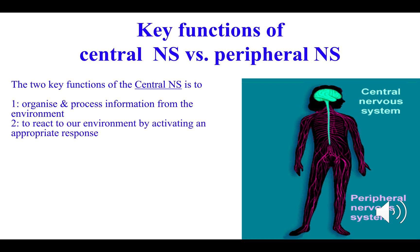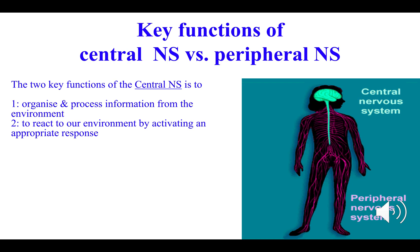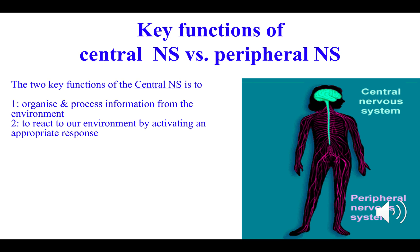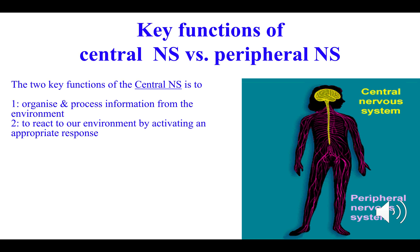The second key function of the CNS is to react to this information by triggering a response or a change. So once the brain receives information from the various physiological systems, it'll trigger a necessary change in heart rate, in terms of hormonal secretions, in terms of the immune response, etc.